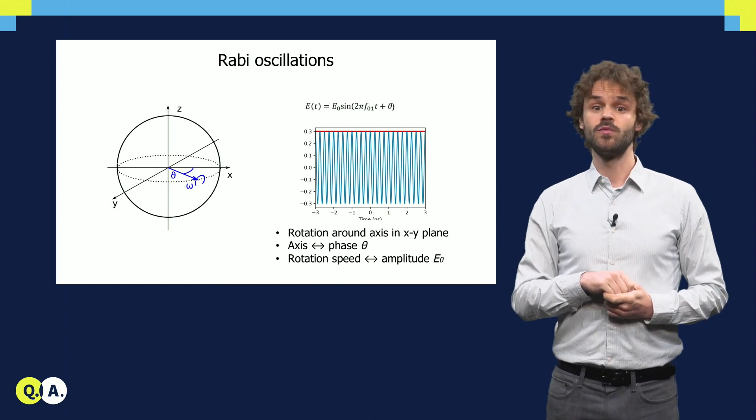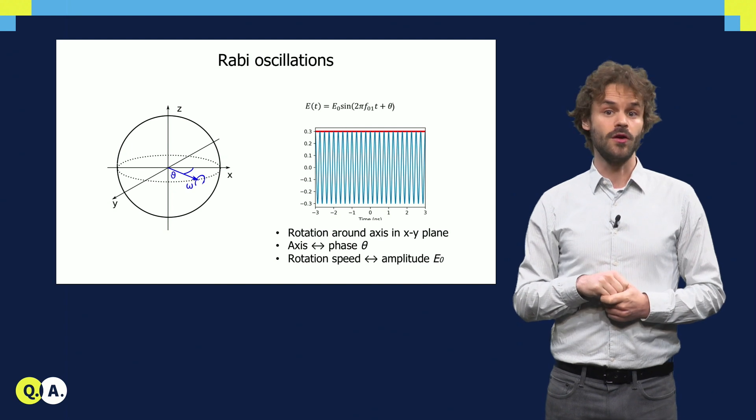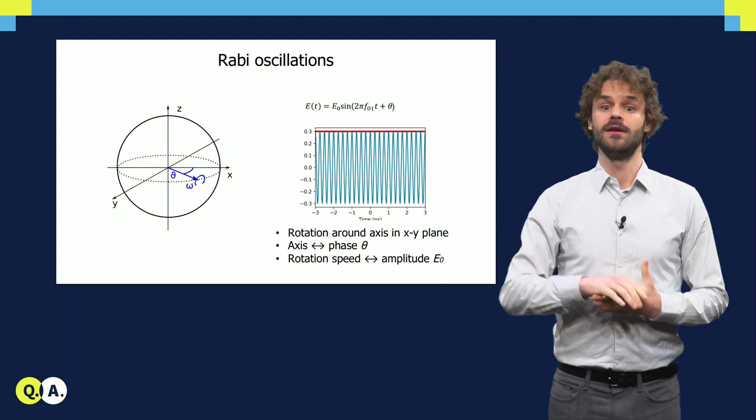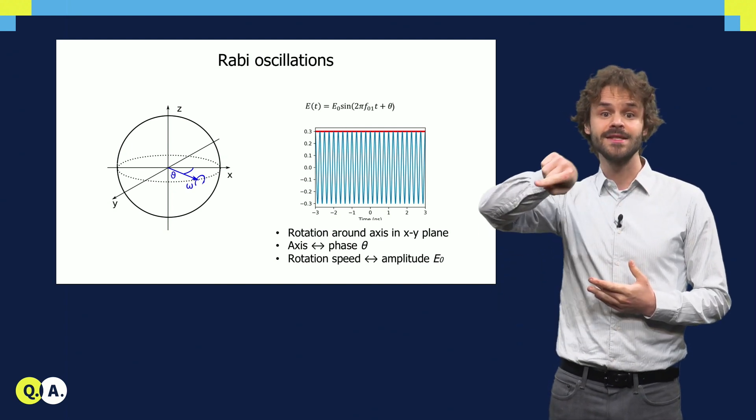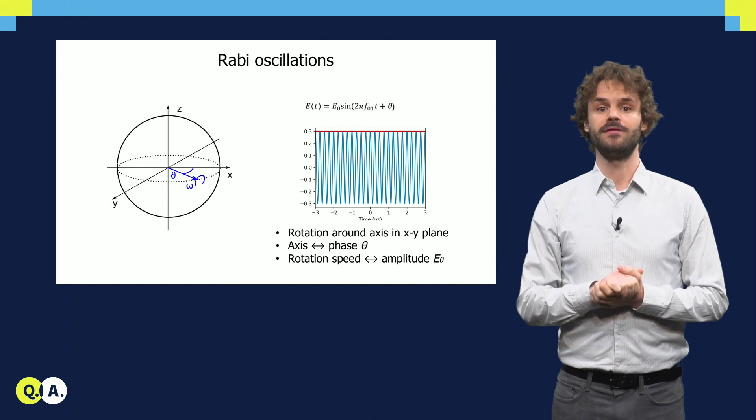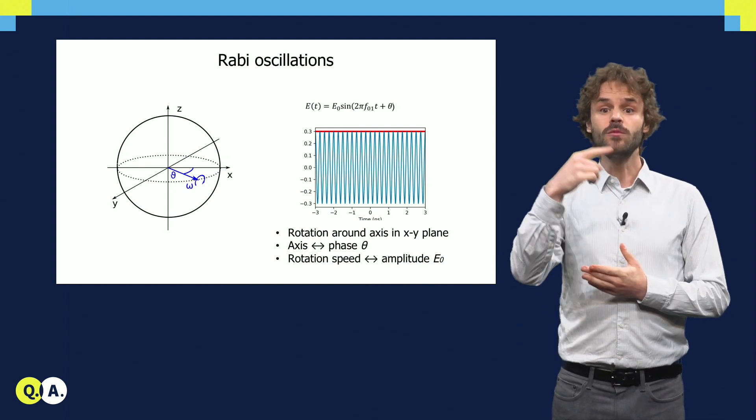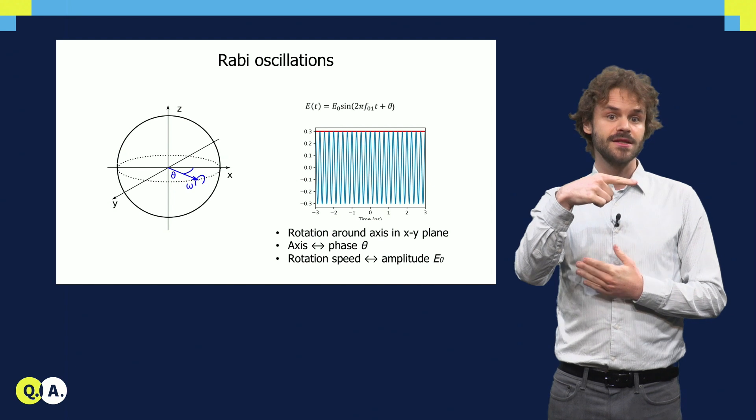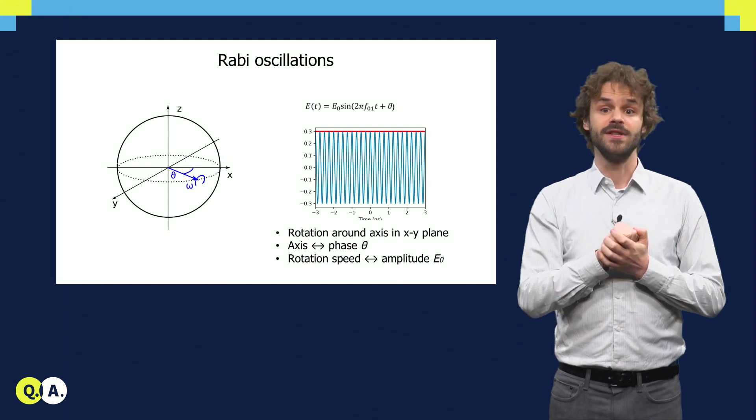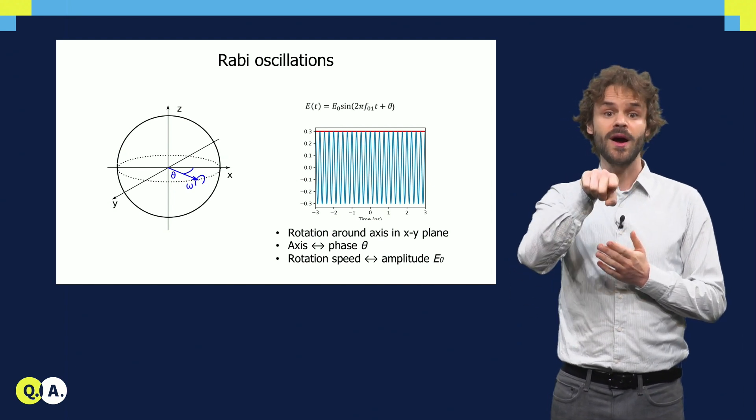The axis of rotation always lies in the xy-plane. We can control where exactly it lies by changing the phase of the applied field. A sine wave leads to a rotation around the x-axis, while a cosine with 90 degrees phase offset will reduce the rotation around the y-axis.